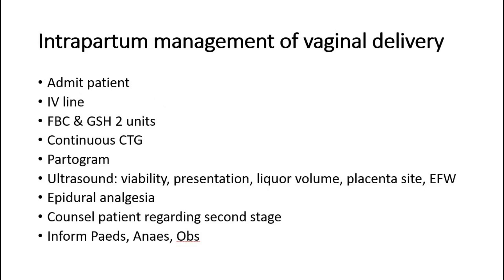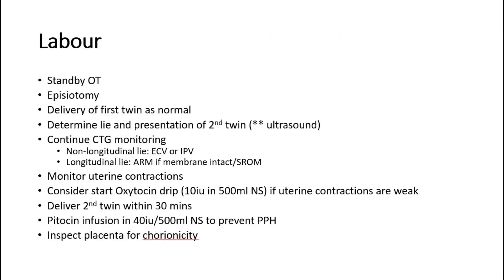For intrapartum management of vaginal delivery, admit the patient, insert an IV line, and take blood for full blood count and group and save 2 units. Perform continuous CTG monitoring and partogram. Ultrasound can be done to check viability, presentation, liquor volume, placenta site, and estimated fetal weight. Give epidural anaesthesia and counsel the patient regarding the second stage of labour. Inform the paediatrician, anaesthetist, and obstetrician.